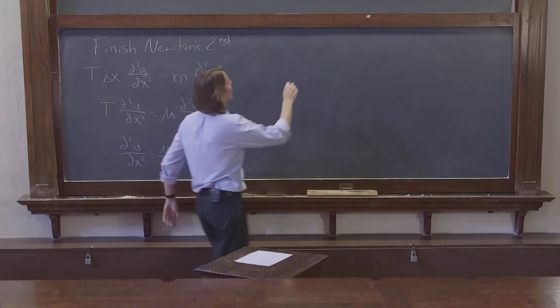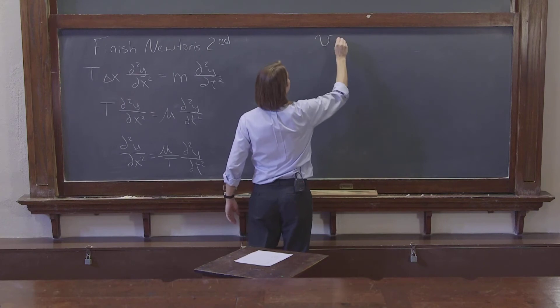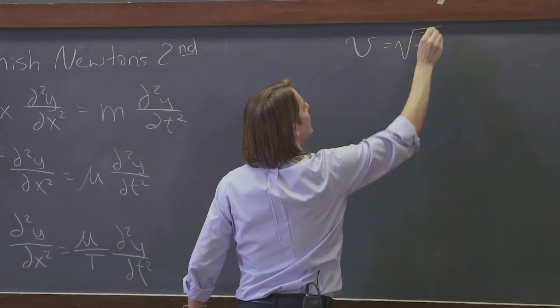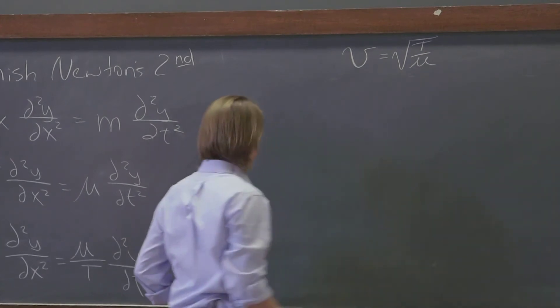So we could actually, if we wanted to, we could say, let's define a velocity and rewrite that as a velocity as a square root of T, the tension, over the mass density.